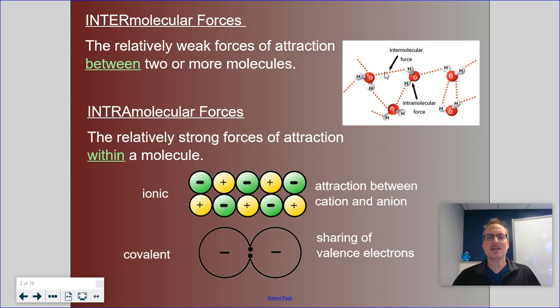Also looking at intramolecular forces on here, we would see that ionic compounds have this attraction between the anion and the cation, and this is our little crystal lattice picture that you're very familiar with. And then, of course, we have also the sharing of valence electrons in our covalent bonds.